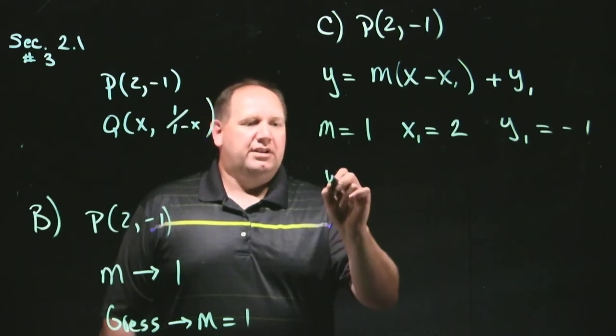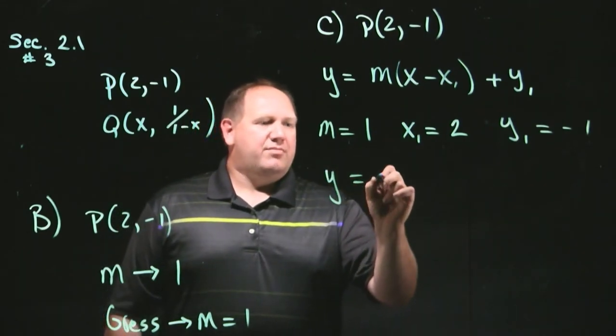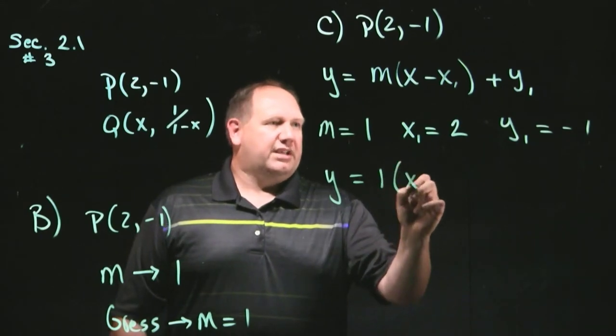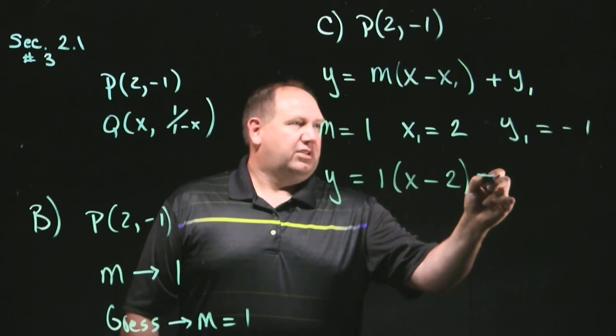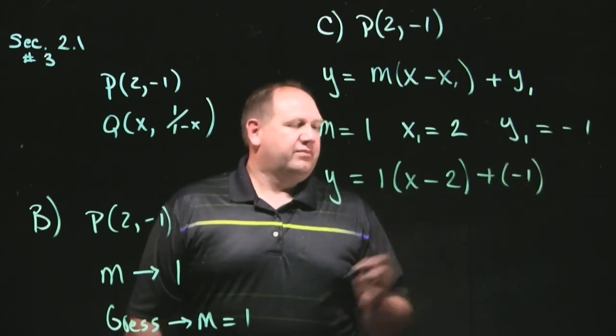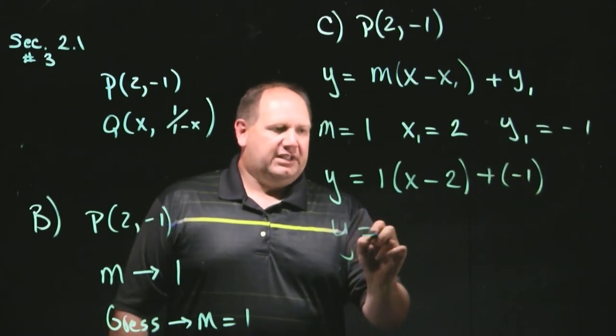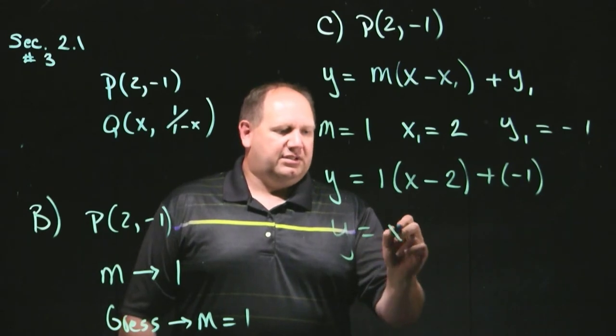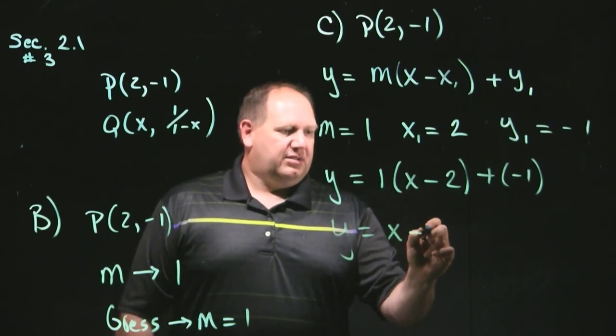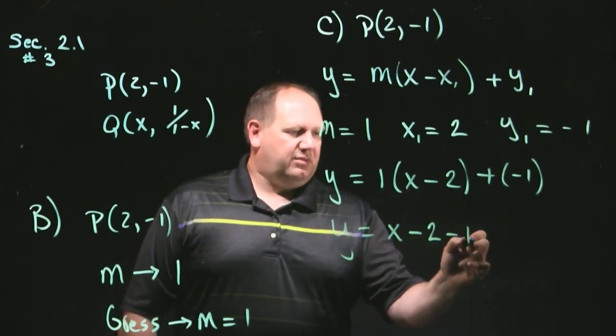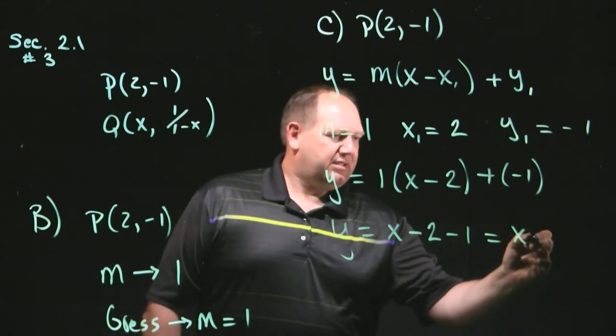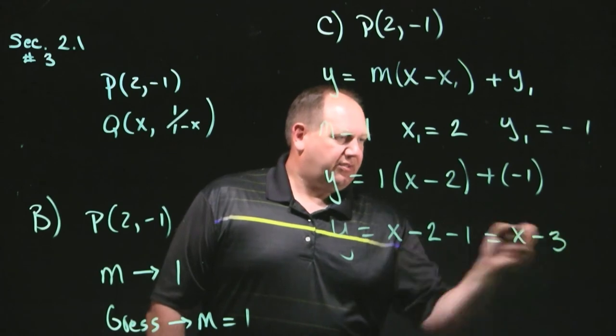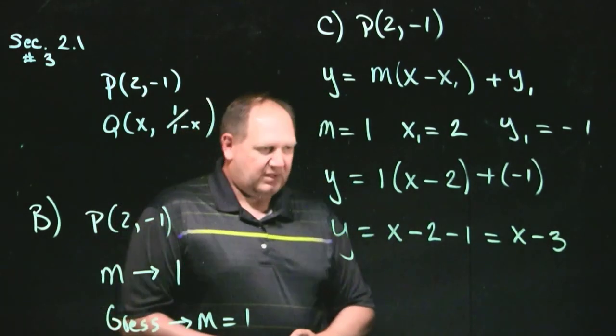Okay? So, we just plug it in. y is equal to m, which is 1 times x minus 2 plus negative 1. And this simplifies to y equals x minus 2 minus 1, which is x minus 3.